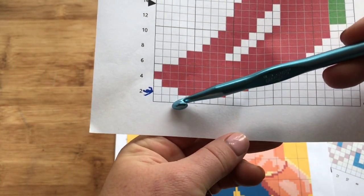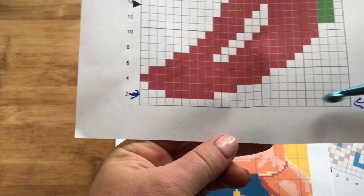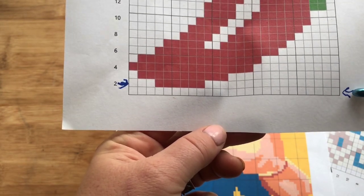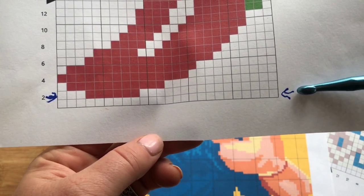There's different ways when you're working a graph. If you're going to do a row by row graph, there's a direction of the work. First you're going to work a foundation single crochet row or a chain.